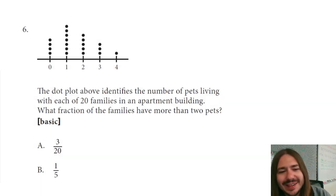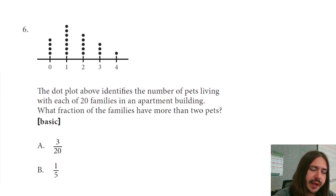Hey y'all, welcome back. Number six says the dot plot above identifies the number of pets living with each of 20 families in an apartment building. What fraction of the families have more than two pets?